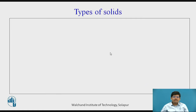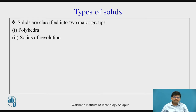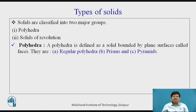We have types of solids. Solids are classified majorly into two groups: polyhedra and solids of revolution. We will look into the details of each.